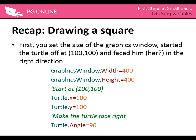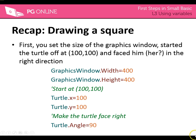So we've got a bit of a recap for drawing a square. First thing we want to do is change the size of the window — we can do that with graphics window dot width equals 400 and graphics window dot height equals 400, so that makes a perfect square of 400 by 400. Then we want to start at 100, 100. Note the little apostrophe in the green bit — that means it is a comment. Then turtle dot x equals 100 and turtle dot y is 100. Remember the top left corner starts at 0,0, so bottom right is 400,400 and bottom left is 0,400. We can make the turtle face right by doing turtle dot angle equals 90 — straight up is 0, right is 90, 180 is going down, and to the left is 270.